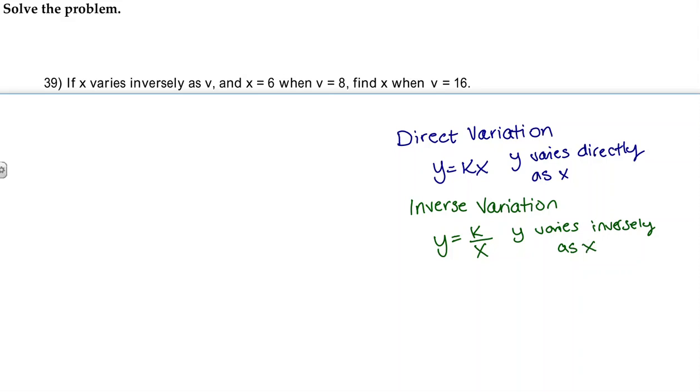And then we also have joint variation where y equals kxz and this reads y varies directly as x and z. In other words, two or more variables.